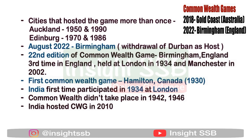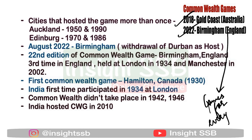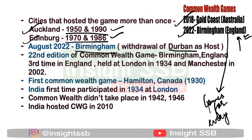Australia has hosted the Commonwealth Games a maximum of five times: 1938, 1962, 1982, 2006, and 2018. The 2018 edition was at Gold Coast, Australia. The 2022 Commonwealth Games will be held in Birmingham, England, with the motto 'Games for Everyone.' Originally, Durban was to host the 2022 Games but withdrew, likely due to lack of funds, and Birmingham replaced them.